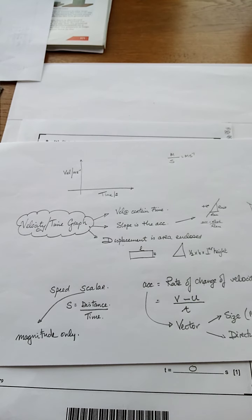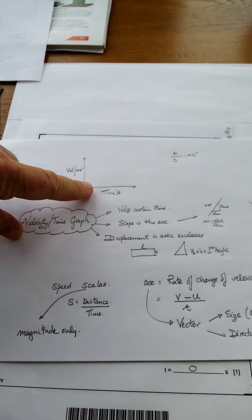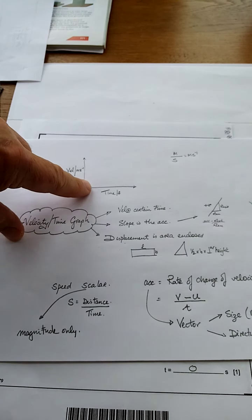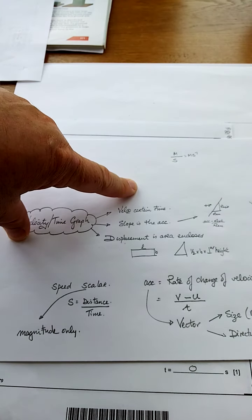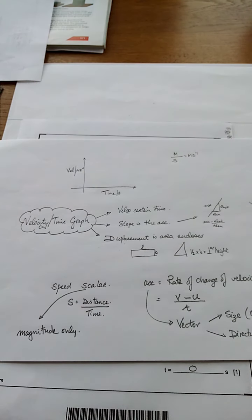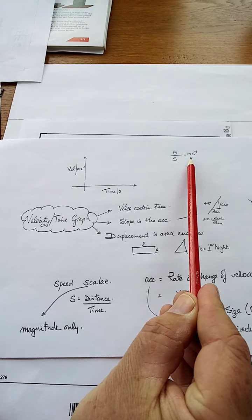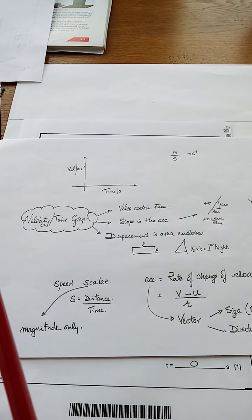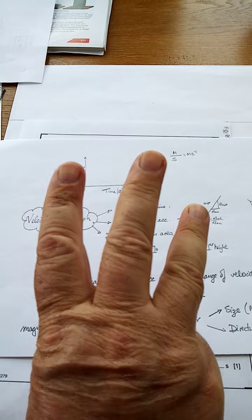Now it's a velocity time graph, so therefore the velocity is on the y-axis and the time is on the x-axis. The velocity is measured in meters per second. It's also ms to the minus one, same thing. But velocity time graphs, you can only learn three things.